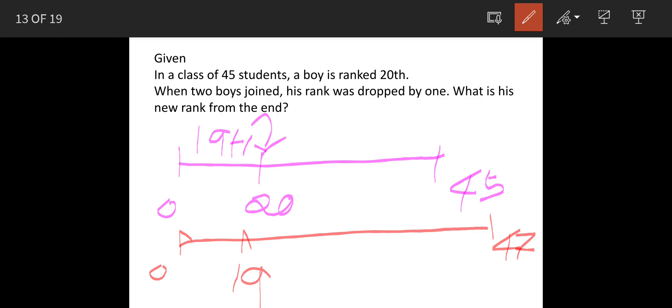So how many people are in between? What is his rank from this end? This is what the question is. So 47 minus 19 is 26. But this 26 does not include the person who is sitting here. So when we include this person also, this becomes 26 plus 1.